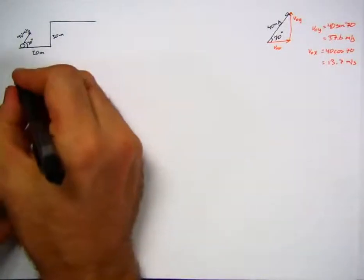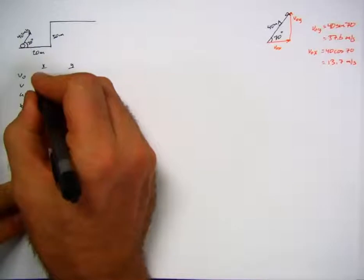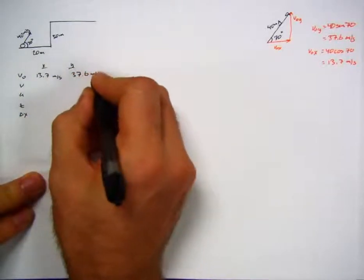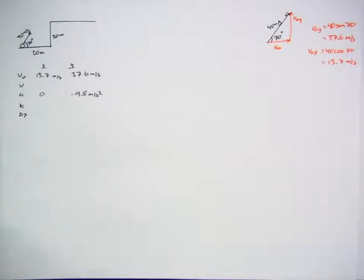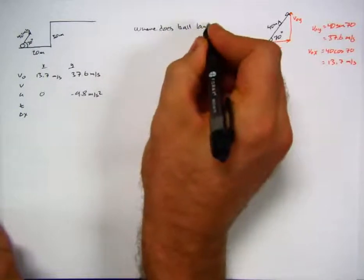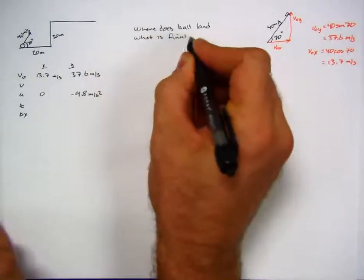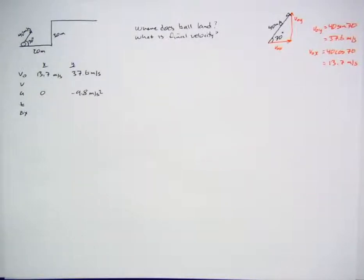Setting up the table: v0x = 13.7 m/s, v0y = 37.6 m/s, acceleration in x = 0, acceleration in y = -9.8 m/s². We want to find where the ball lands, and we'll also look at final velocity. We may get maximum height and time in the air along the way.